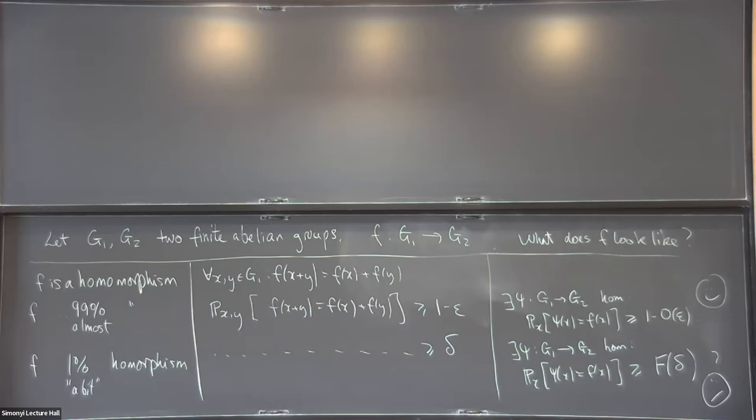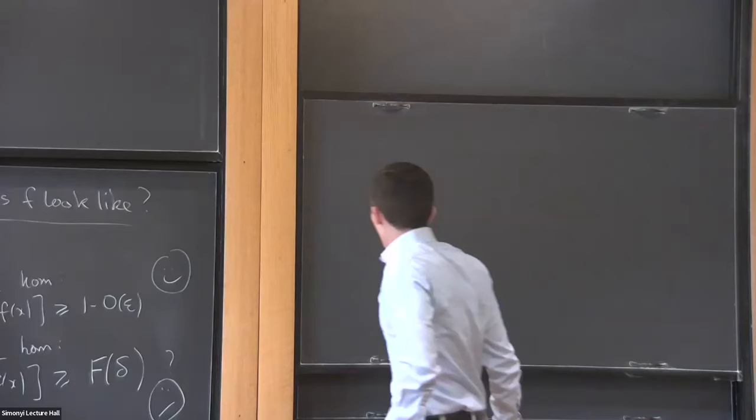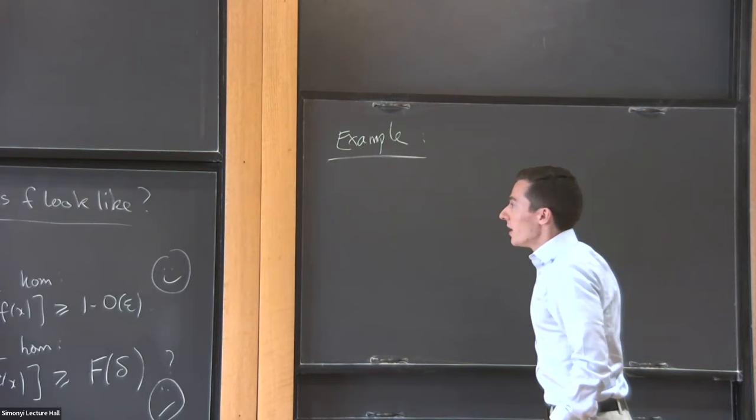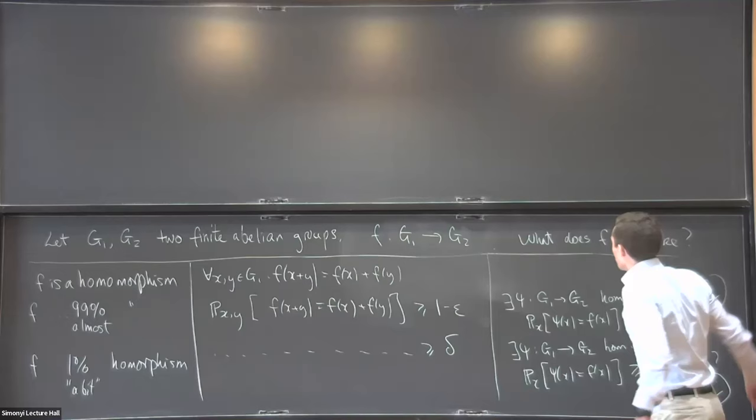The 1% regime is significantly harder by comparison. To give you one idea why this question is harder: one reason is because it's not true. Here's an example. Since this seminar has computer science in the title, you should feel free to take G1 = F2^n and G2 = F2^n — that's a very natural case. But if I also take the integers, then an absolutely classic function would be something like f(x) = floor of x times the square root of two.